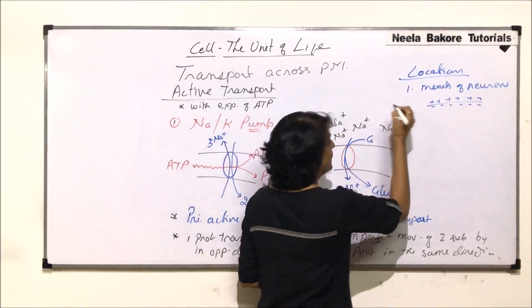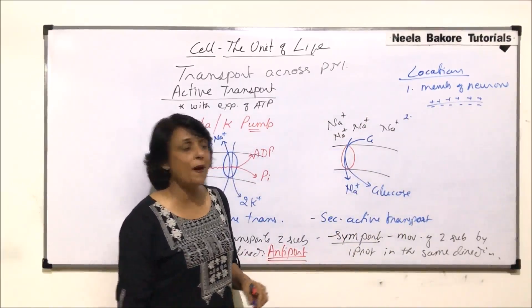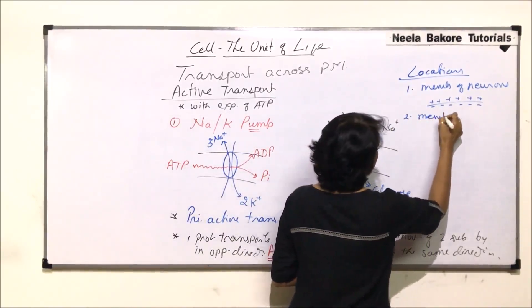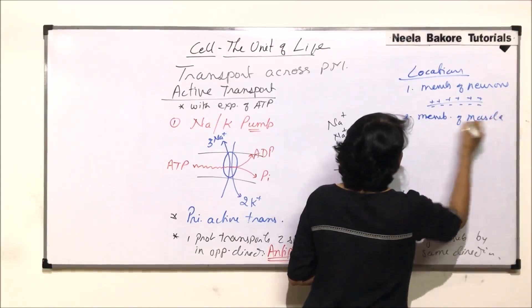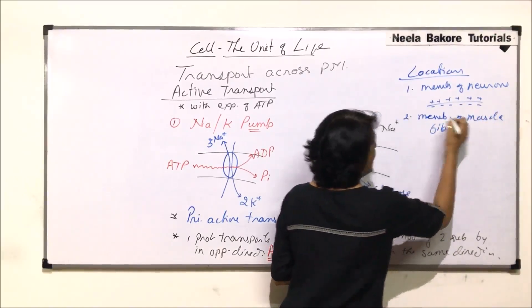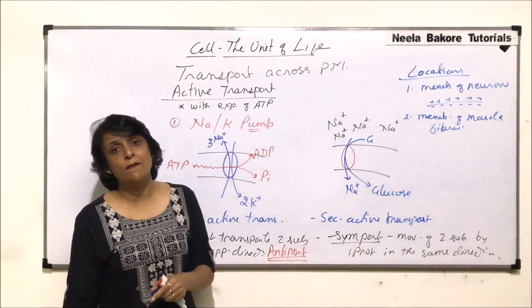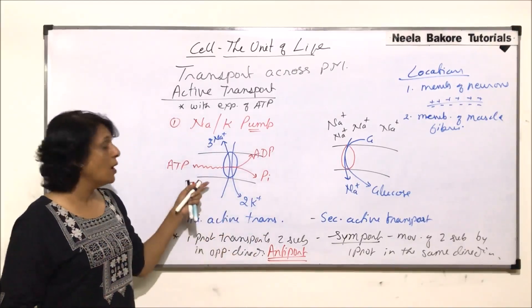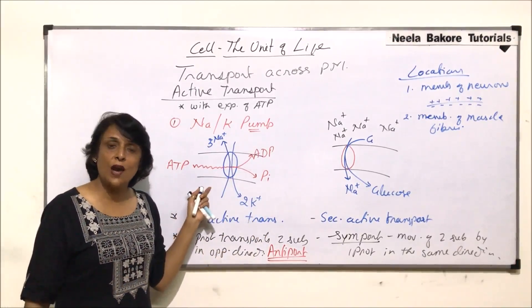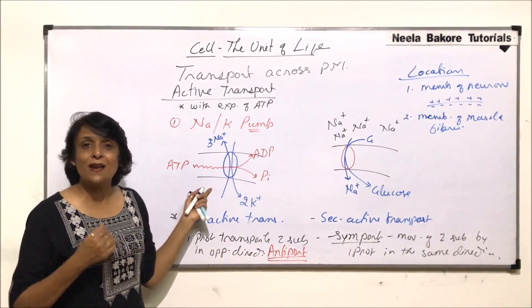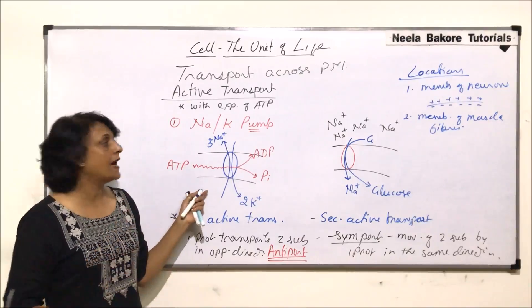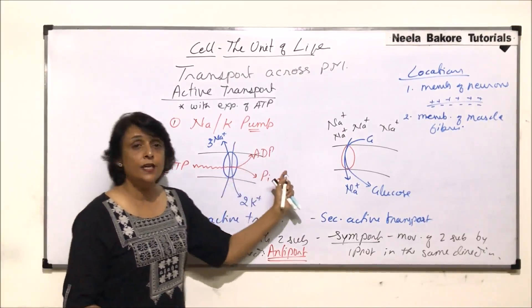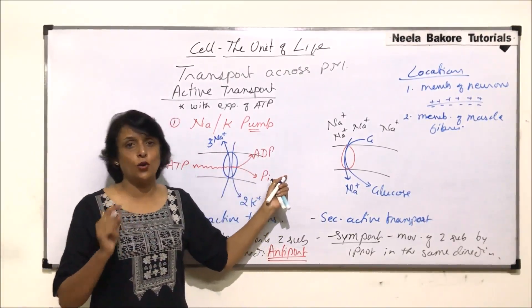The second location where we find sodium-potassium pumps is the membranes of muscle fibers. On muscle fibers, it is the same pattern — electro-positive on the outside and electro-negative on the inside — due to the unequal distribution of charges. These sodium-potassium pumps are present mainly in areas where this electro-positive, electro-negative nature has to be maintained.